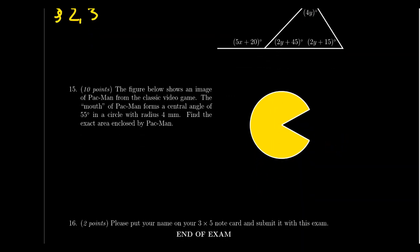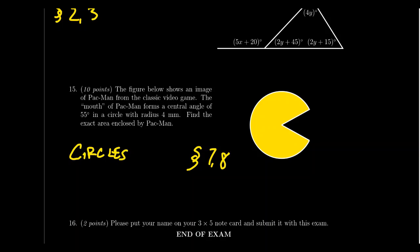Question number 15 is a story problem involving circles. This includes things like sector area or total area of a circle, arc length, or angular velocity. For example, you might be asked to find the area of a Pac-Man shape — that's a fun question. These story problems with circles come from lectures 7 and 8. Be prepared to answer a story problem involving these circle properties.